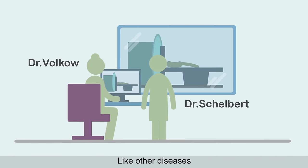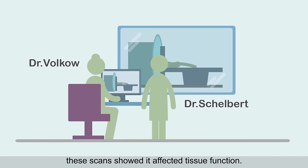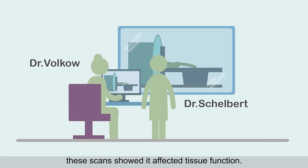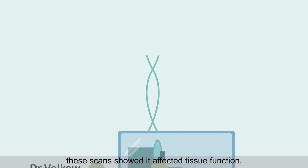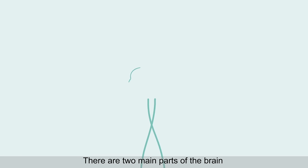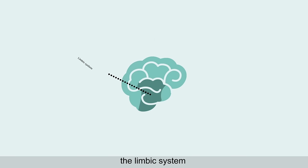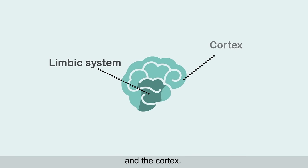And like other diseases, these scans showed it affected tissue function. So there are two main parts of the brain affected by drug use: the limbic system and the cortex.